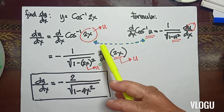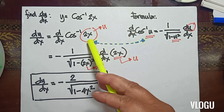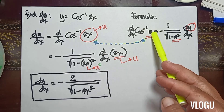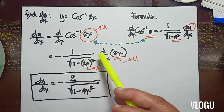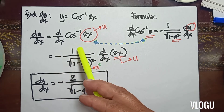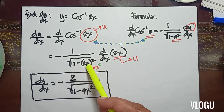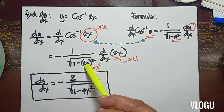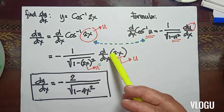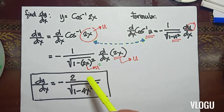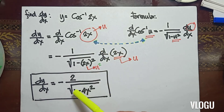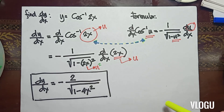From the formula, that is equivalent to negative 1 over the square root of 1 minus u squared. Our u is 2x, so we have 2x raised to the square, which gives 4x squared. The derivative of u — u is 2x — is 2. Therefore, the derivative of cosine inverse of 2x is equivalent to negative 2 over the square root of 1 minus 4x squared.